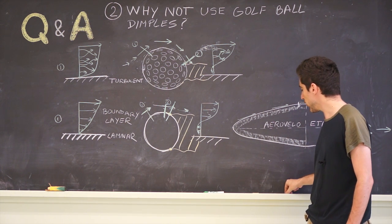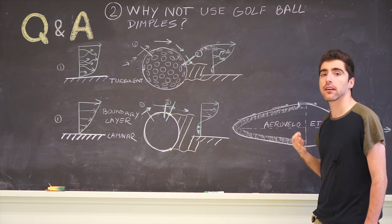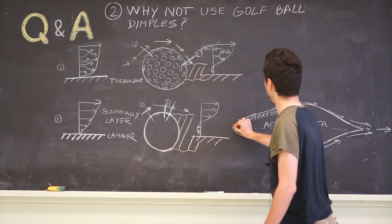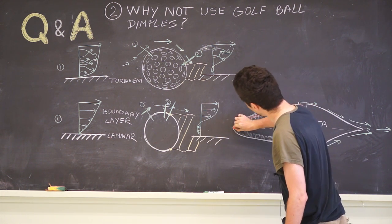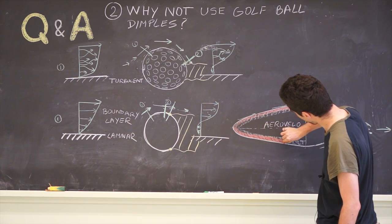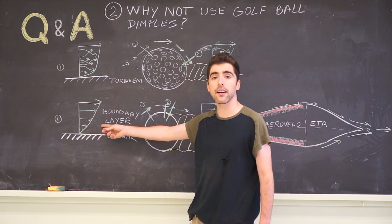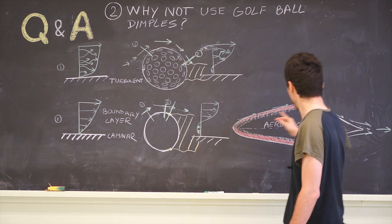We actually want to have as big of a laminar region as possible. This entire front region is designed with a profile that keeps the boundary layer laminar for as long as possible.